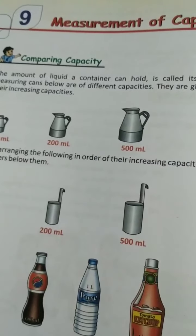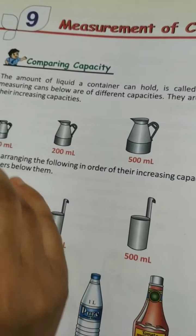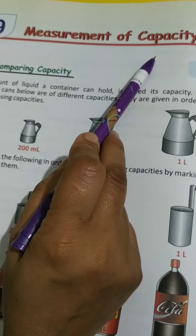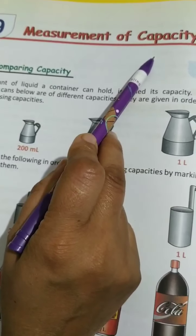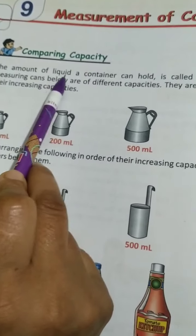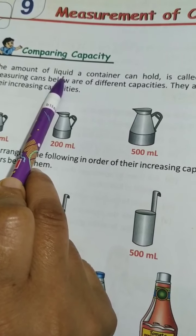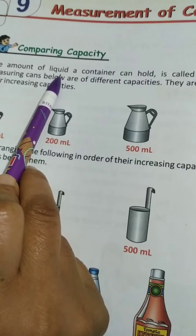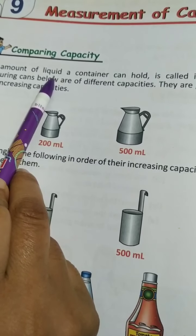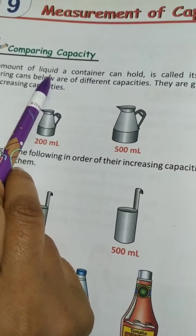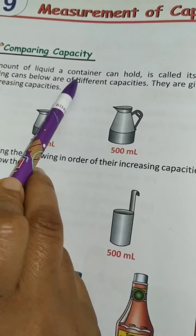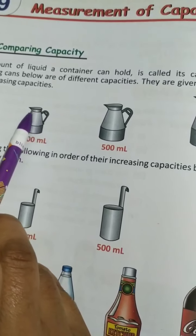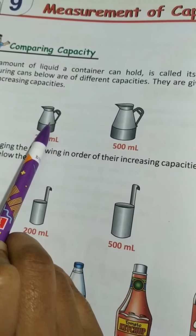Hello students, today we are going to start Chapter 9: Measurement of Capacity. First of all, what is capacity? The amount of liquid — liquid means a thing which flows, like water, oil, syrup — these are called liquids. The amount of liquid a container can hold is called its capacity. A container means something in which we are putting the liquid.